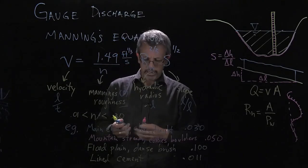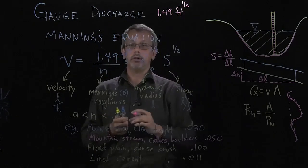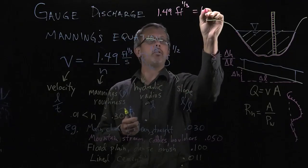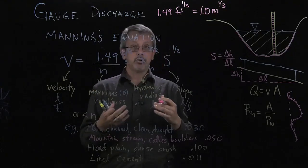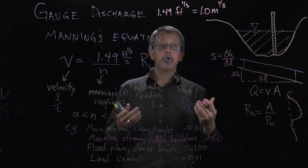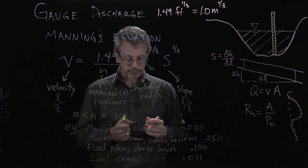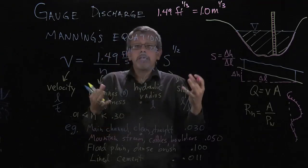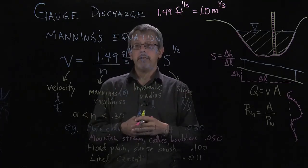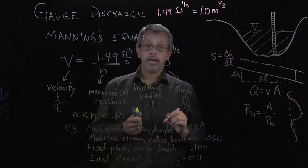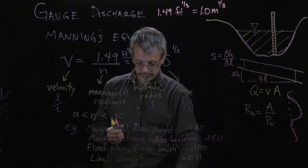Notice, where does this number 1.49 come from? Well, it turns out that 1.49 feet to the one-third power is equal to 1.0 meters to the one-third power. So that 1.49 is related to the value for meters. Meters, there are 3.28 feet in a meter. And if you take that to the one-third, you end up getting this value of 1.49. So that's important there. There's two ways to remember this. You can either remember there's the foot to the one-third. The other way to remember it is that there's basically two equations. The English equation uses the 1.49, whereas the metric system equation simply uses 1.0 in the Manning's equation.